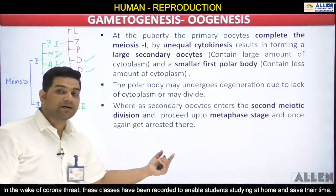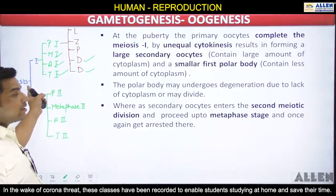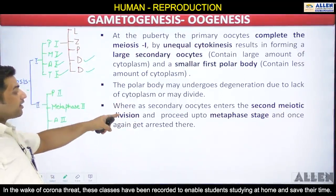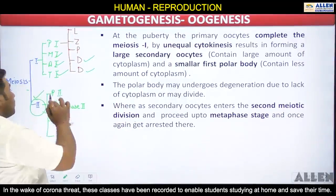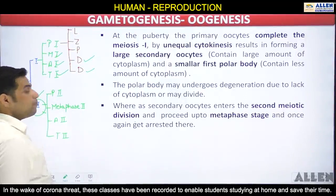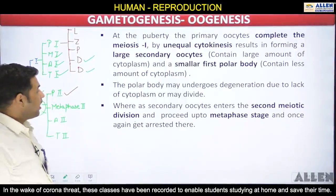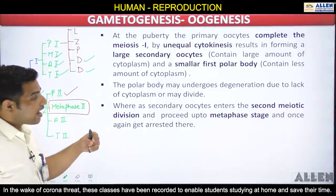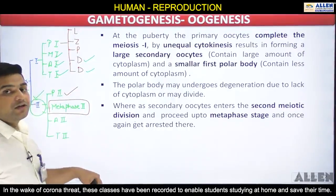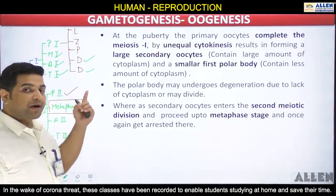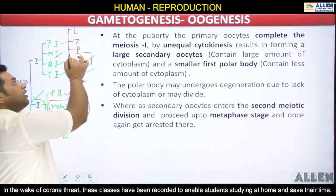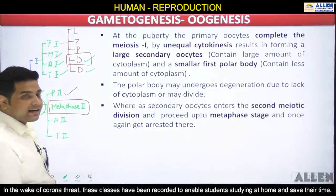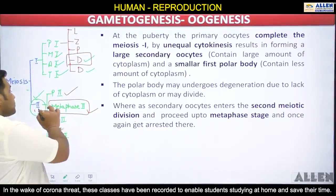The secondary oocyte then enters the second meiotic division. After completion of meiosis I and formation of the secondary oocyte, meiosis II begins. The secondary oocyte completes prophase II, but when it enters metaphase II, it is arrested again. So the arrest of the oocyte occurs two times: first in the primary oocyte at diplotene of prophase I of meiosis I during embryonic life, and second in the secondary oocyte at metaphase II of meiosis II after puberty.